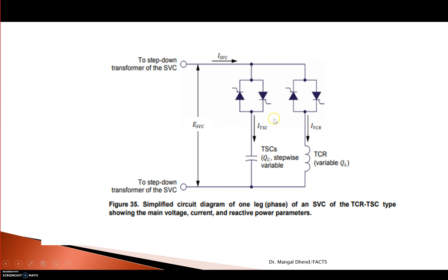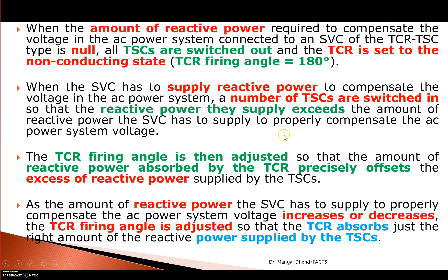For one leg, the total SVC current I_SVC equals I_TSC minus I_TCR by phasor addition, since TCR absorbs and TSC supplies. When TCR firing angle is 180 degrees, TCR output is 0. When TCR firing angle is 90 degrees, TCR output is maximum. Like that, you can control any amount of power — absorb or supply into the system.